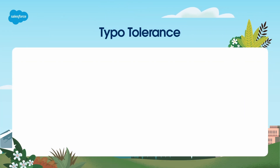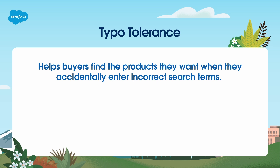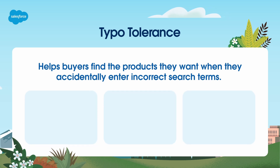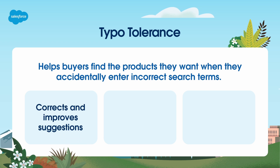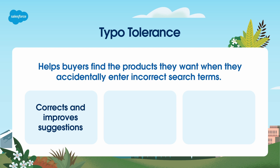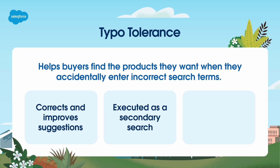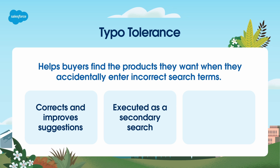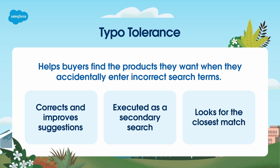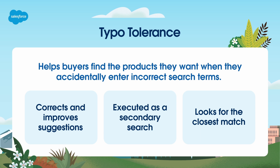Let's start with typo tolerance, which helps buyers find the products they want when they accidentally enter incorrect search terms. Typo tolerance corrects and improves suggestions by matching and returning similar terms to the ones made in the search. It's enabled by default in your org, but is always executed as a secondary search, which means that it updates the search phrase to contain any possible corrections and then repeats the search. Typo tolerance always looks for the closest match within two corrections of the original term that returns results.